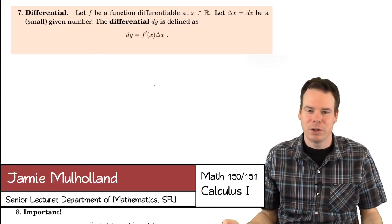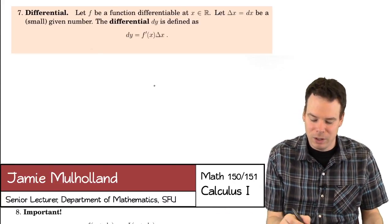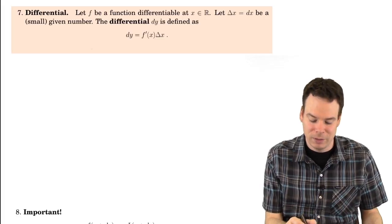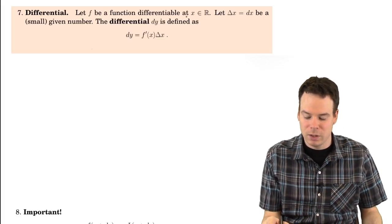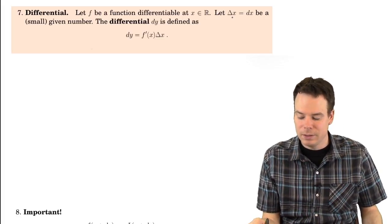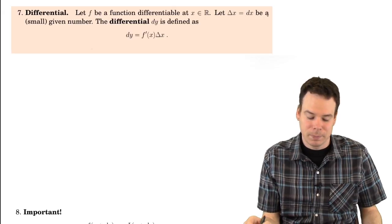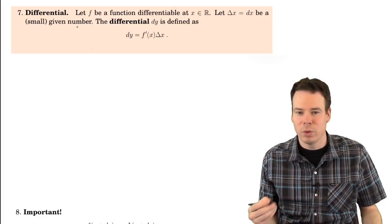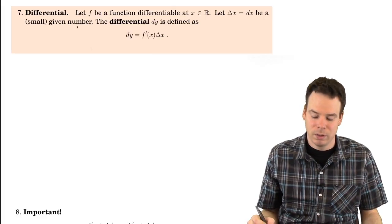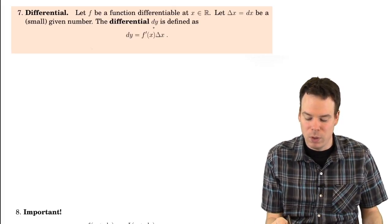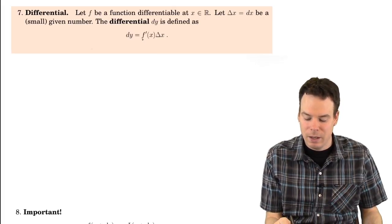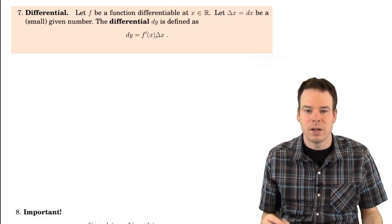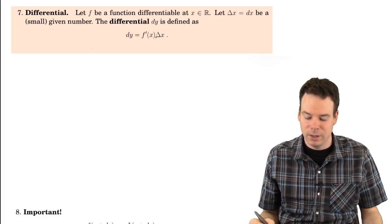We just finished discussing linear approximation, and now I want to introduce the concept known as a differential. Let f be a function differentiable at x. Let delta x, also denoted by dx, be a small given number — something like 0.01 or 0.001. The differential dy is defined as f prime of x times delta x, the derivative of f times the small number delta x.